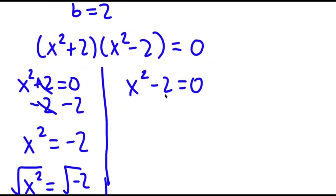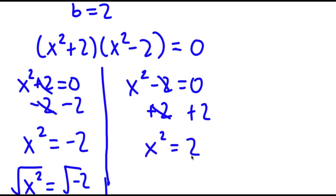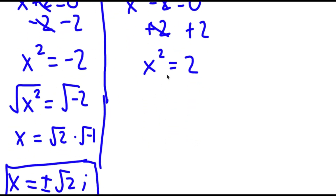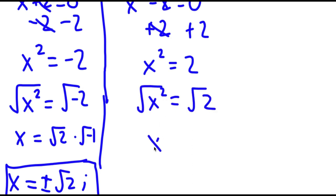For x squared minus 2 equals 0, I can simply add 2 on both sides, and I get x squared is equal to positive 2. To solve this, I'm going to take the square root on both sides. The square root of x squared is x, and this is equal to positive or negative the square root of 2.